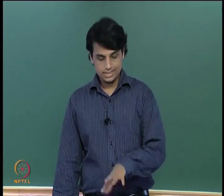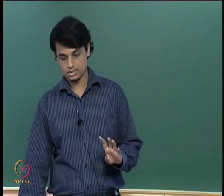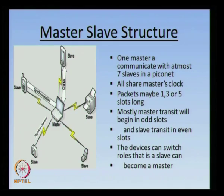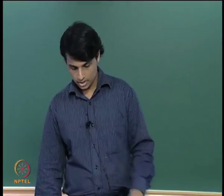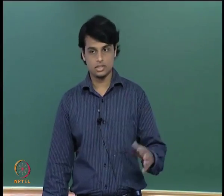What is master-slave structure? While transmitting data, the sender is the master and the receiver is the slave. In a master-slave structure of Bluetooth, a master can have at most seven slaves and all should have the master's clock. The master may transmit during odd cycles while the receiver transmits during the even cycles. The master and the slave can also switch their roles while transmission.